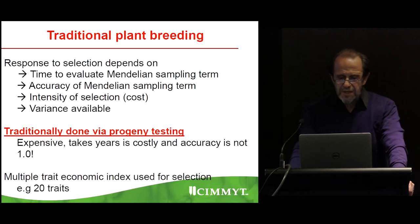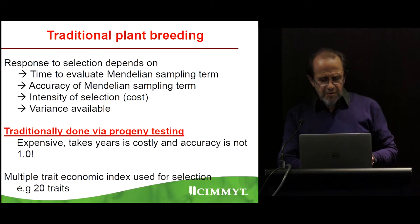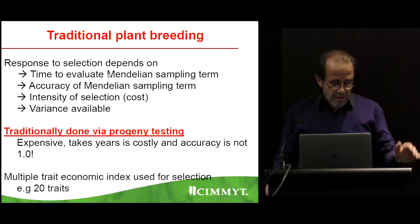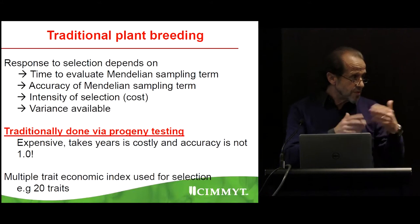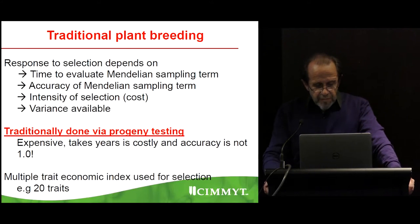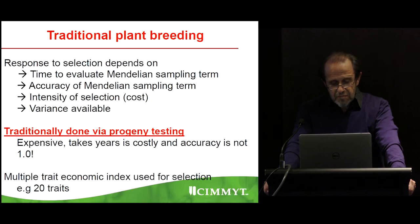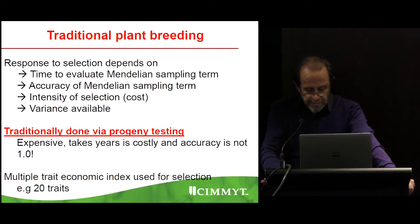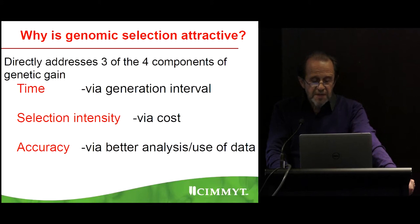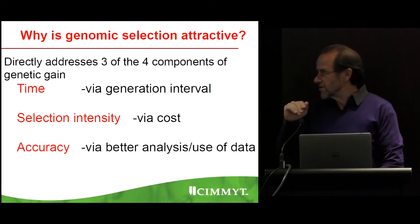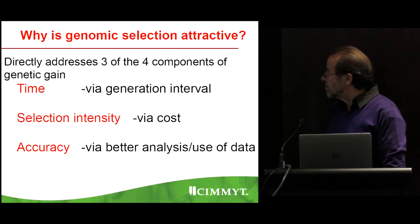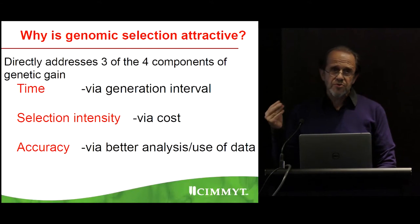In traditional plant breeding, the response to selection depends on the time to evaluate the Mendelian sampling. In animals or in plants, we use replicated field trials comparing full sibs, half sibs, or related lines. Intensity of selection is very costly, and traditionally we use progeny testing, which is expensive and the accuracy is not one. Genomic selection is attractive because it will exactly assess the time, the intensity of selection, and the accuracy. This is why it's a very attractive tool for breeding.